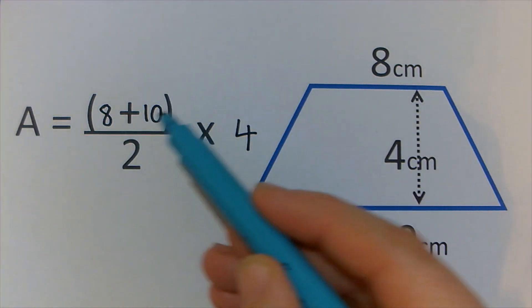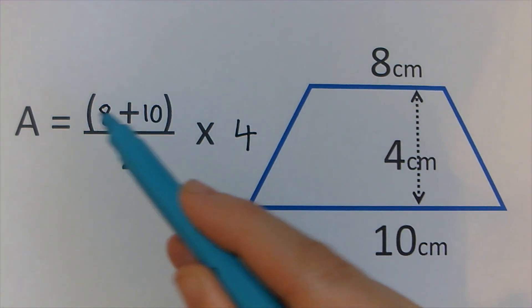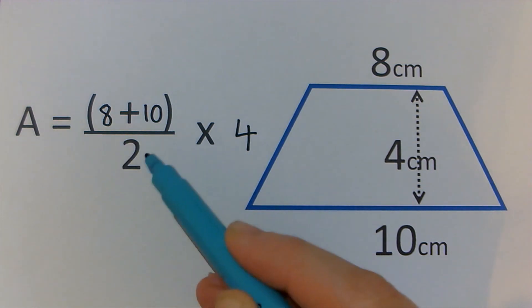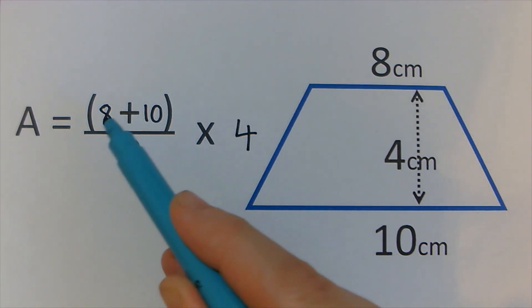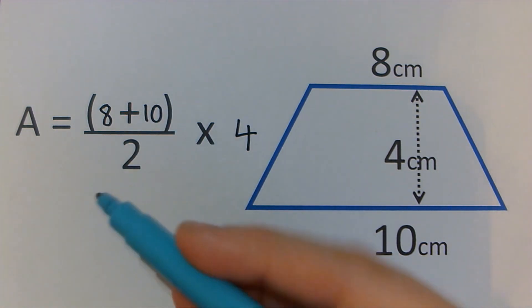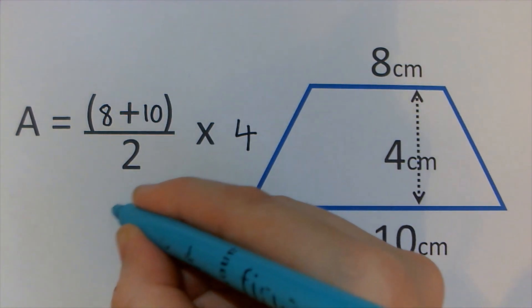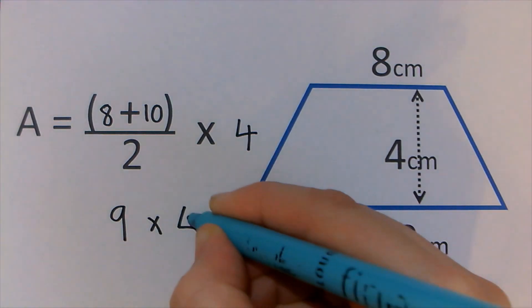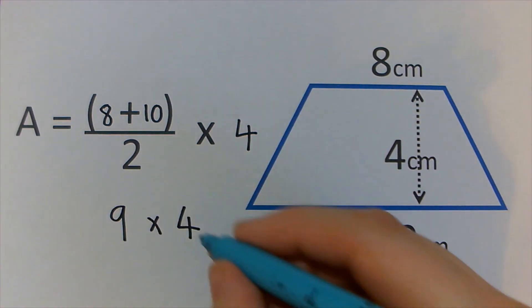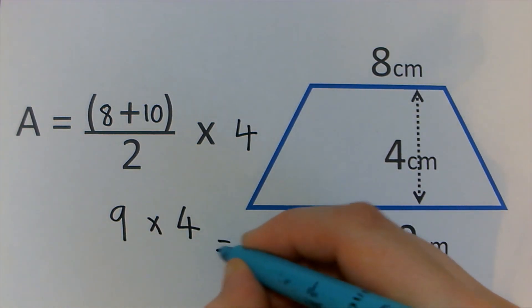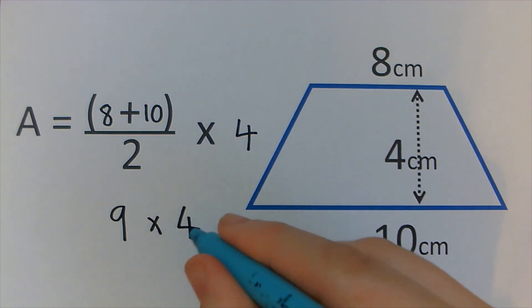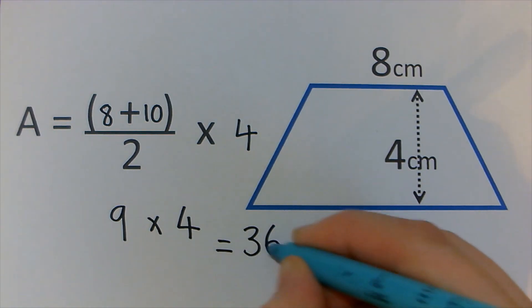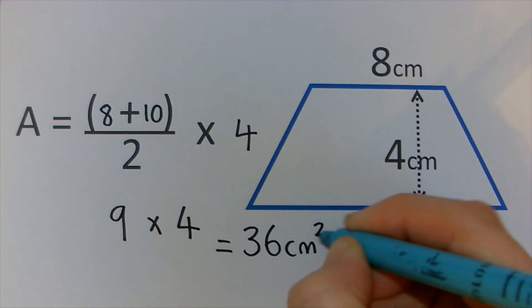Sum of the parallel sides: 18. All halved, divided by 2. Half of 18 is 9. 9 times the distance between them — 9 times 4 is 36 cm squared.